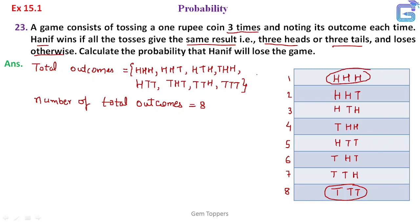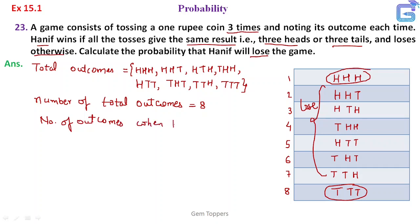So when will he lose? We need to find the probability that Hanif will lose the game. The losing outcomes are eight minus two, which equals six. So the number of outcomes when Hanif will lose is six.